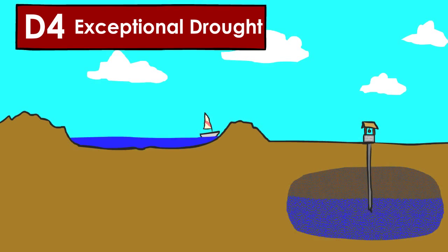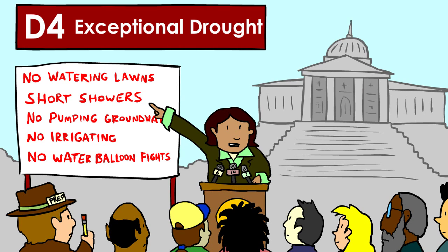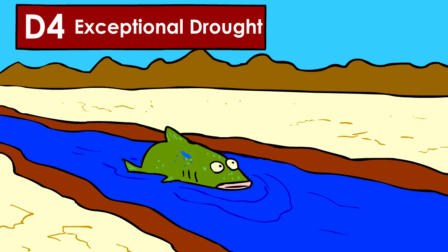D4 is classified as exceptional drought. At this point, you could expect depleting reservoirs and aquifers. Water shortages would climb to emergency levels, and you could expect lower or empty streams and lakes, affecting not only agriculture, but fish and wildlife as well.